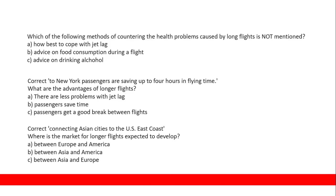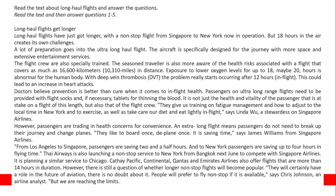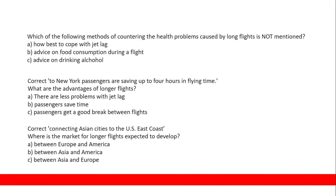'Which of the following methods of countering health problems caused by long-haul flights is not mentioned? A: How to best cope with jet lag. B: Advice on food consumption during a flight. C: Advice on drinking alcohol.' Passengers receive training on fatigue management, how to adjust to local time, exercise, drink plenty of water to avoid dehydration, and eat lightly in flight. Alcohol is not mentioned at all. So the answer is C — advice on drinking alcohol.